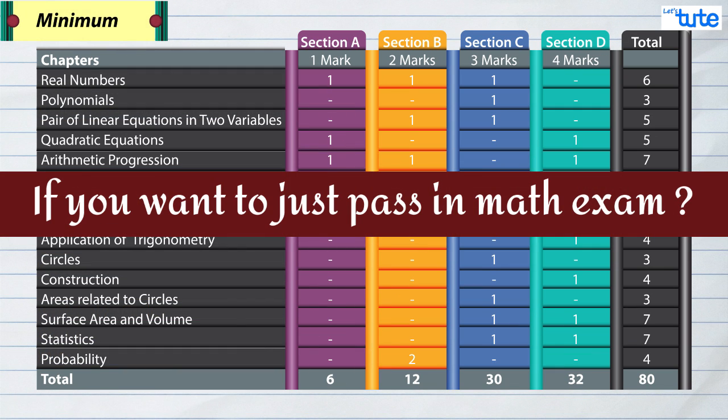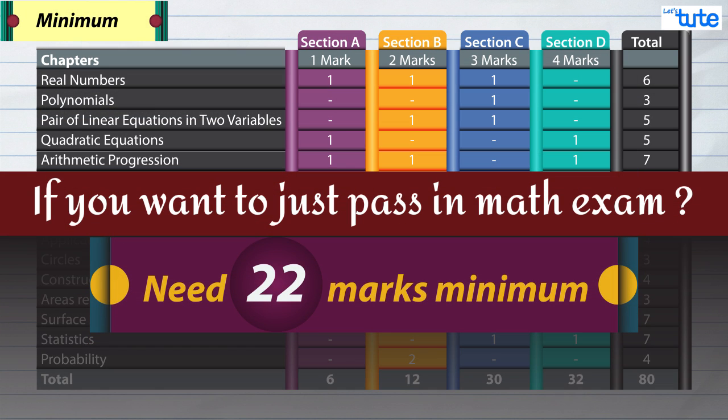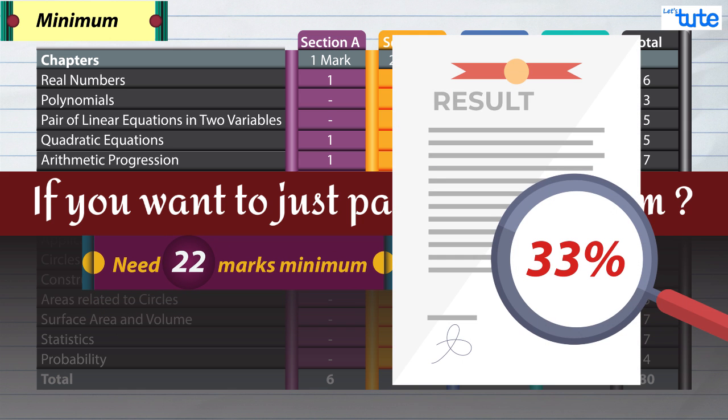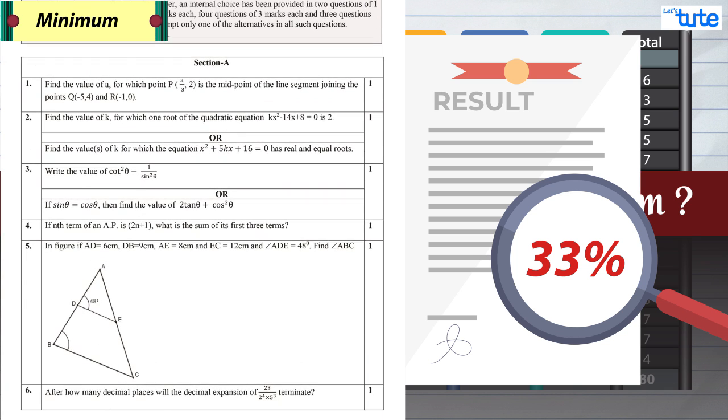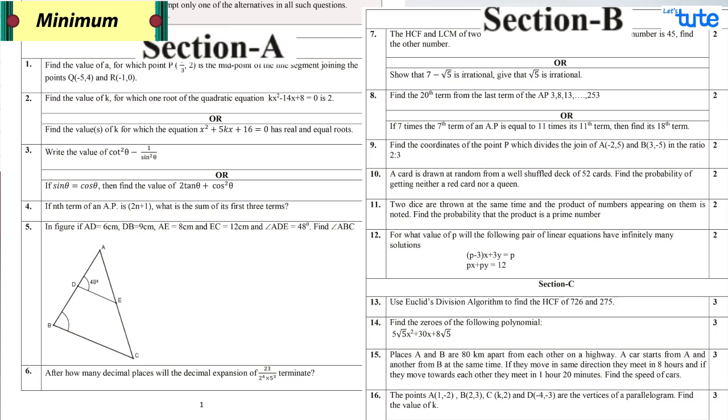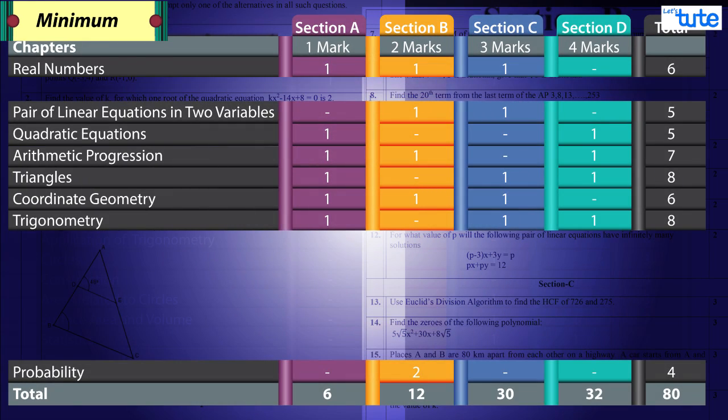If you just want to pass in math exams, which means you need 22 marks minimum, which is 33%. In order to score the minimum marks, you will have to attempt section A and section B. In these sections, the questions are asked from these 8 chapters.